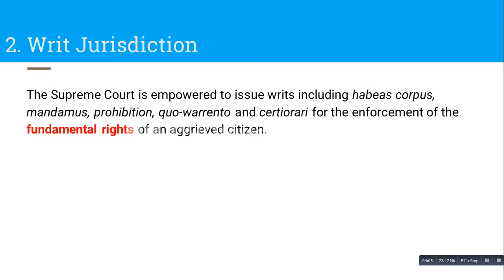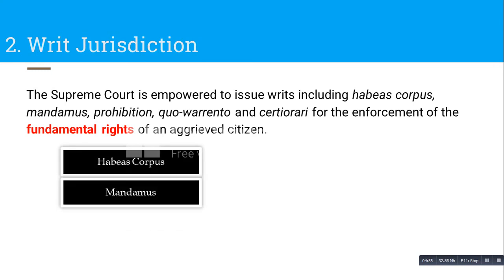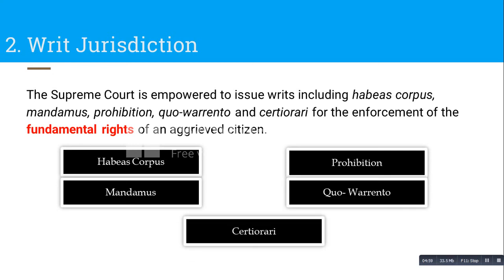Second comes writ jurisdiction. The Supreme Court is empowered to issue writs including habeas corpus, mandamus, prohibition, quo warranto, and certiorari for the enforcement of fundamental rights of an aggrieved citizen. This is used through Article 32, which is the constitutional heart and soul — an aggrieved citizen whose fundamental rights have been violated can directly go to the Supreme Court. These writs are issued by the Supreme Court and are of the following types: habeas corpus, mandamus, prohibition, quo warranto, and certiorari.